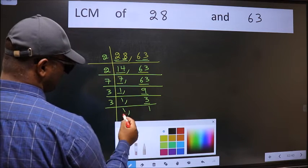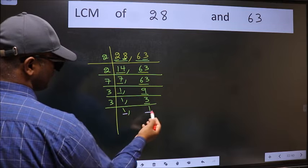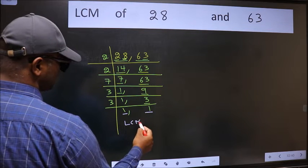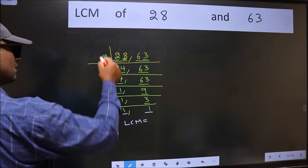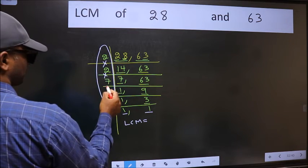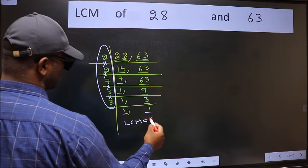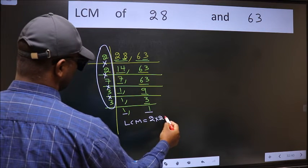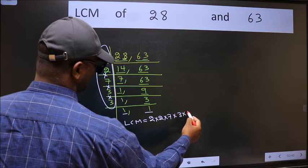So we got 1 in both the places. So our LCM is, LCM is the product of these numbers. That is 2 into 2 into 7 into 3 into 3.